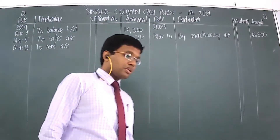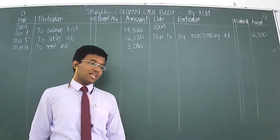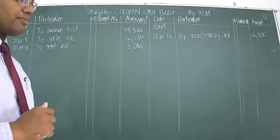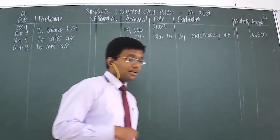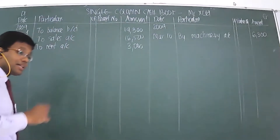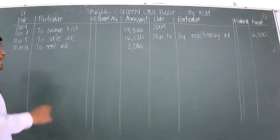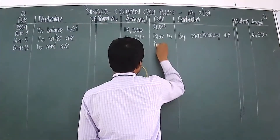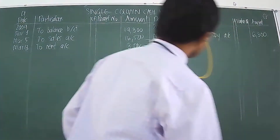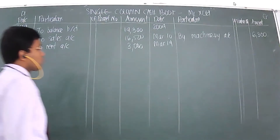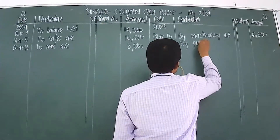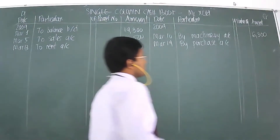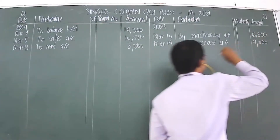March 19th: goods purchased for cash from David. You're carrying out a cash purchase from David. Had this been a credit purchase, you would show it in your purchase book — but since it is a cash purchase, it goes in the cash book. Cash would be going out, so it features on the credit side: By Purchase Account, and the amount is 9,000.